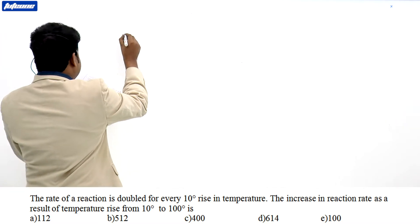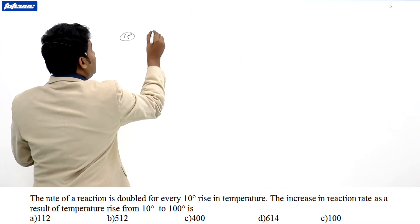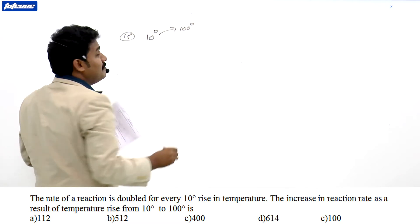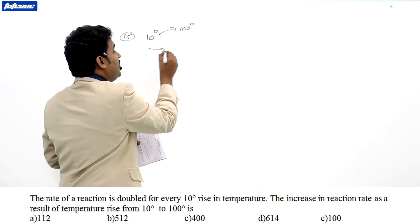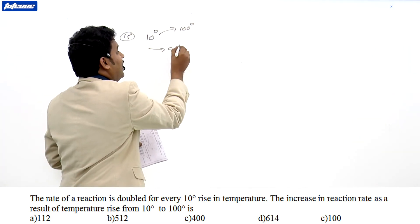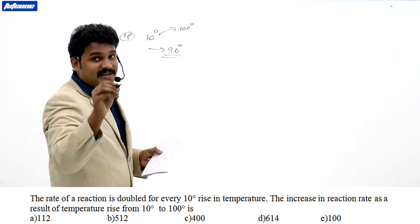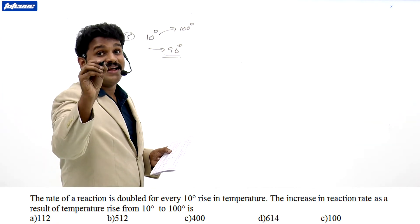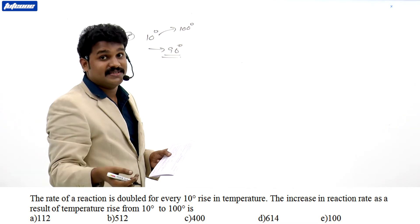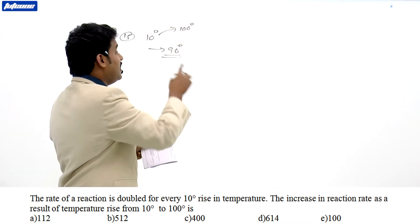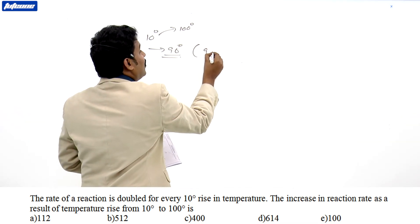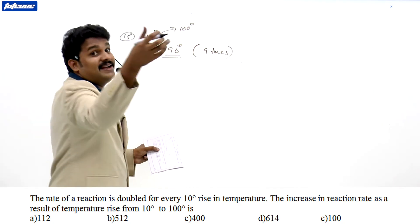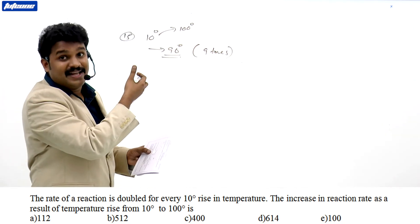Temperature rise from 10 degree to 100 degree means there is a 90 degree rise. In every 10 degree rise, rate of reaction doubles. 90 degrees means a total of 9 times 10 degree rise takes place here.